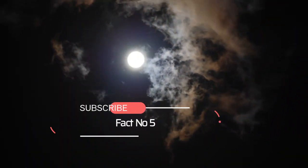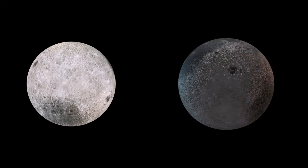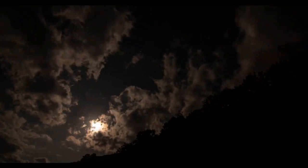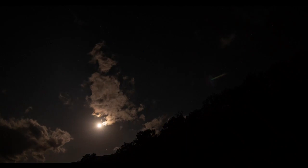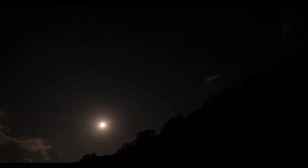Fact number five, the moon is moving away from the Earth at a rate of 3.78 centimeters per year. In a few billion years, the moon will be far enough away that we will no longer experience total solar eclipses.